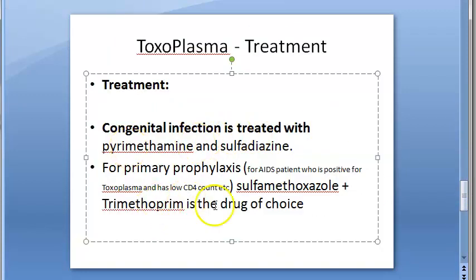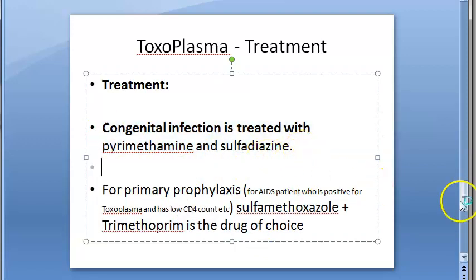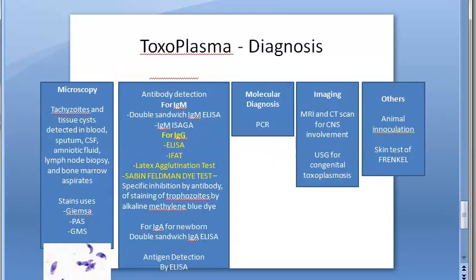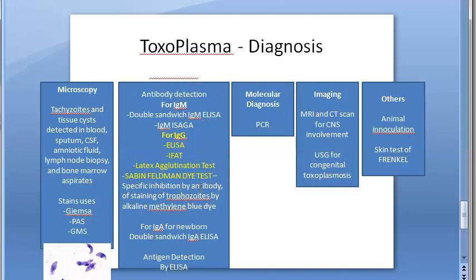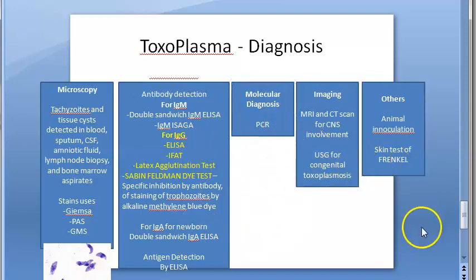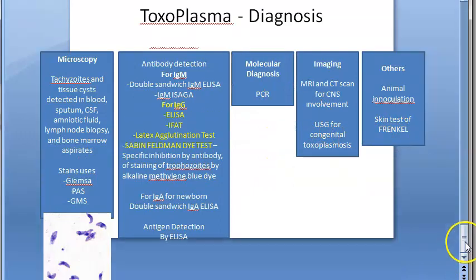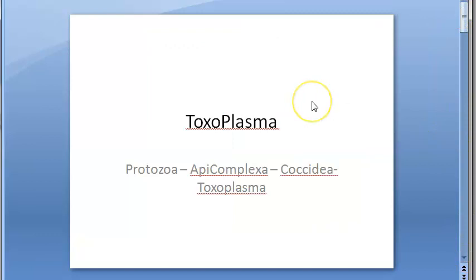Treatment: cotrimoxazole for prophylaxis; pyrimethamine with sulfadiazine for congenital infection. Diagnosis: microscopy — detect tachyzoites and tissue cysts; antibody detection — IgM, IgG (remember Sabin-Feldman dye test); double sandwich ELISA. Molecular diagnosis: PCR. Imaging. Others: skin test of Frenkel. That's all for now on Toxoplasma gondii. We will meet you in the next video.